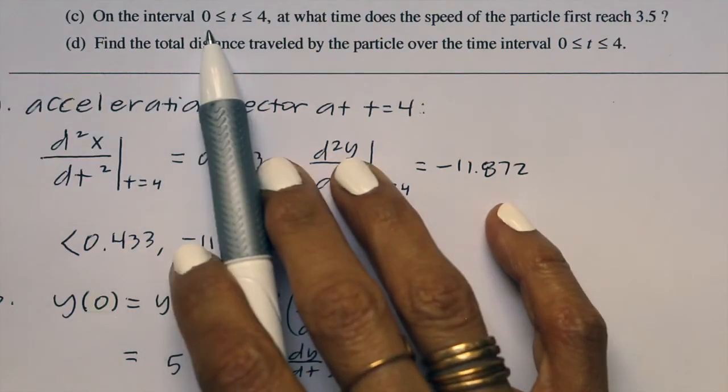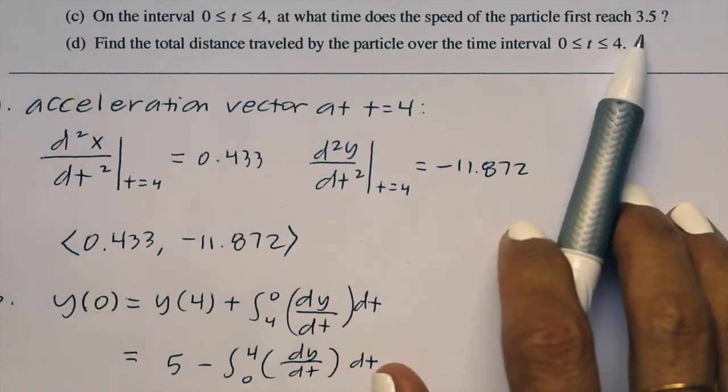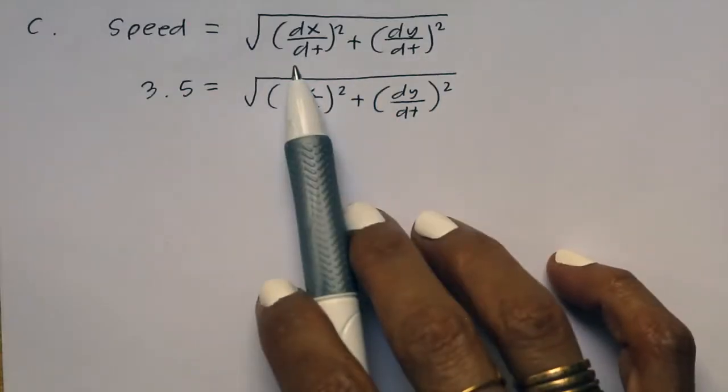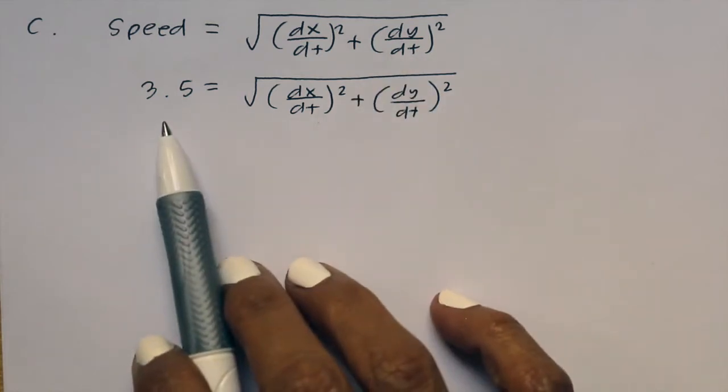Part c says on the interval from 0 to 4, at what time does the speed of the particle reach 3.5. Our speed formula is the square root of dx/dt squared plus dy/dt squared, and we're setting that equal to 3.5.